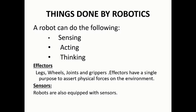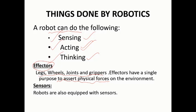A robot can do three things: sensing, acting, and thinking. It will sense, then think, and then finally act — not necessarily in that exact order. Effectors — legs, wheels, joints, and grippers — are all effectors, and each has a single purpose: to assert physical forces on the environment. Robots are also equipped with sensors to sense the environment.